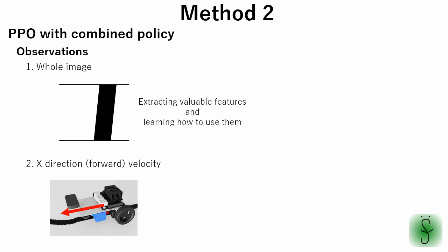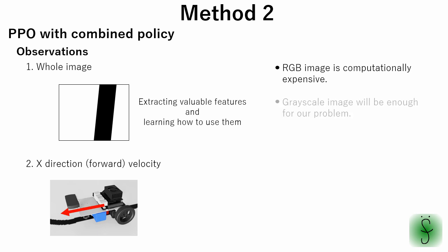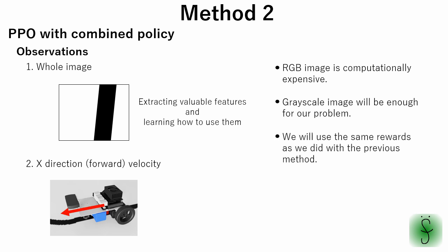Technically, the second method is much more challenging. In case of using images, an important thing is that we will not use RGB format — we will use grayscale. This is because we only have a black line on a white background, so other color information is not required. Excessive information will make training of the network more difficult. As for rewards, we will use the same rewards as with the previous method.